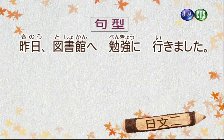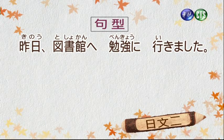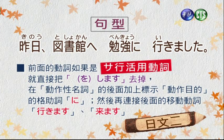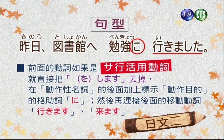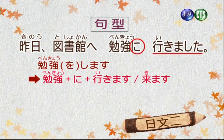昨日図書館へ勉強に行きました（昨天去了圖書館讀書）。要把它改成過去式的用法。免許するこのような三行的活用動詞，直接把をします或はします去掉，在動作性名詞後面加上表示動作目的的格助詞に，再加上移動性動詞いきますまたはきます。譬如勉強します或勉強をします變成勉強に行きます。